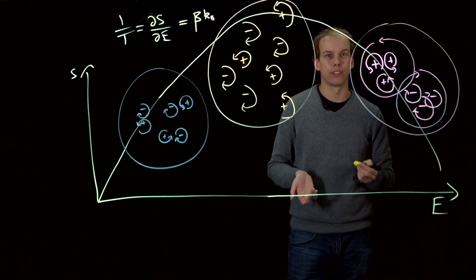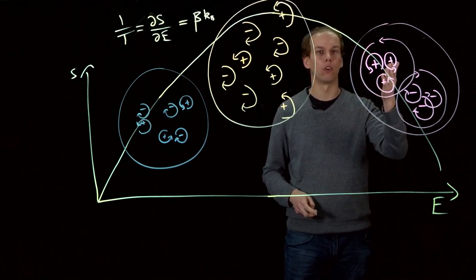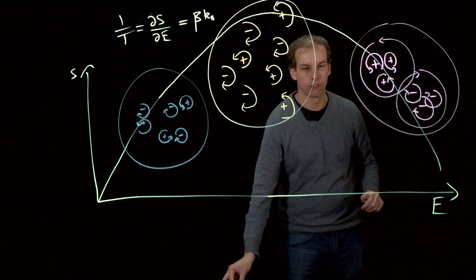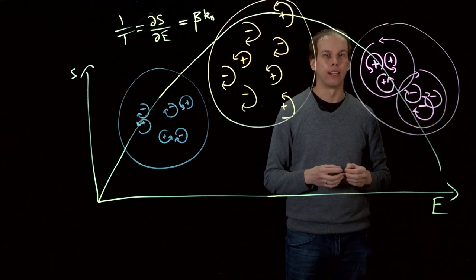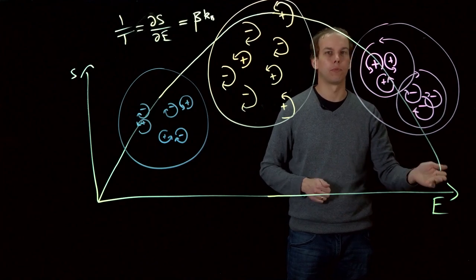There exists in the system a highest possible energy, which essentially corresponds to these vortices of each sign sitting directly on top of each other and separated out in the fluid. There exists a highest possible energy state.